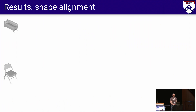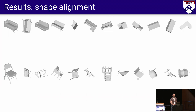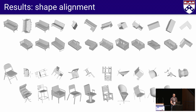Consider this shape-alignment experiment. We are given an object in a reference orientation and a bunch of queries from the same class at arbitrary orientations. The task is to align each query with the reference. We use our model pre-trained on a classification task, and because the feature maps are equivariant, they can be used to extract the relative orientations between shapes. Since they also carry semantics, we are able to align different instances from the same class even under large appearance variation.